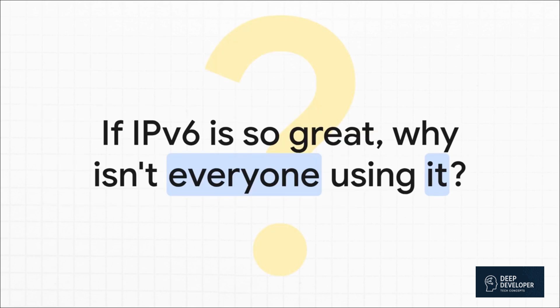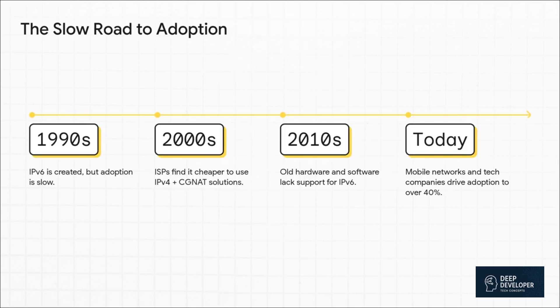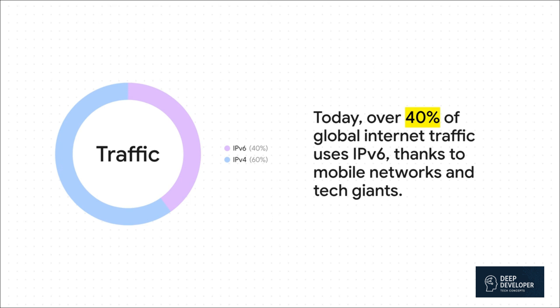At this point, you're probably asking a pretty reasonable question: if this is so great and it solves this massive problem and it's been around for ages, why isn't the entire internet already running on it? Well, the short answer is basically it's complicated. It's a mix of money and plain old inertia. Back in the 90s when it was invented, we weren't running out of IPv4 addresses yet, so nobody cared. Then in the 2000s, it was just cheaper for ISPs to deploy CGNATs than to upgrade all their gear. For a long time after that, a lot of older hardware and software just didn't support it. But that tide has really started to turn, mostly thanks to mobile networks and big tech companies that absolutely need a massive number of addresses. IPv6 now makes up over 40% of all traffic on the internet, and odds are if you have a modern smartphone or home internet connection, you are using it every single day without even realizing it.